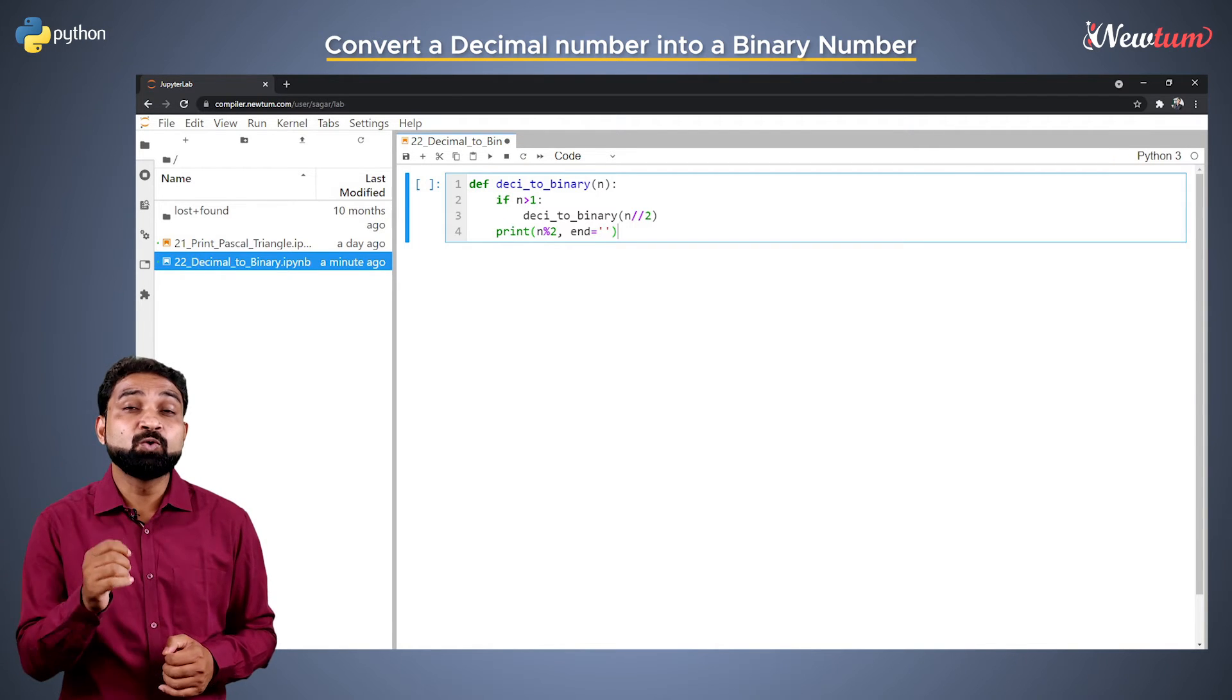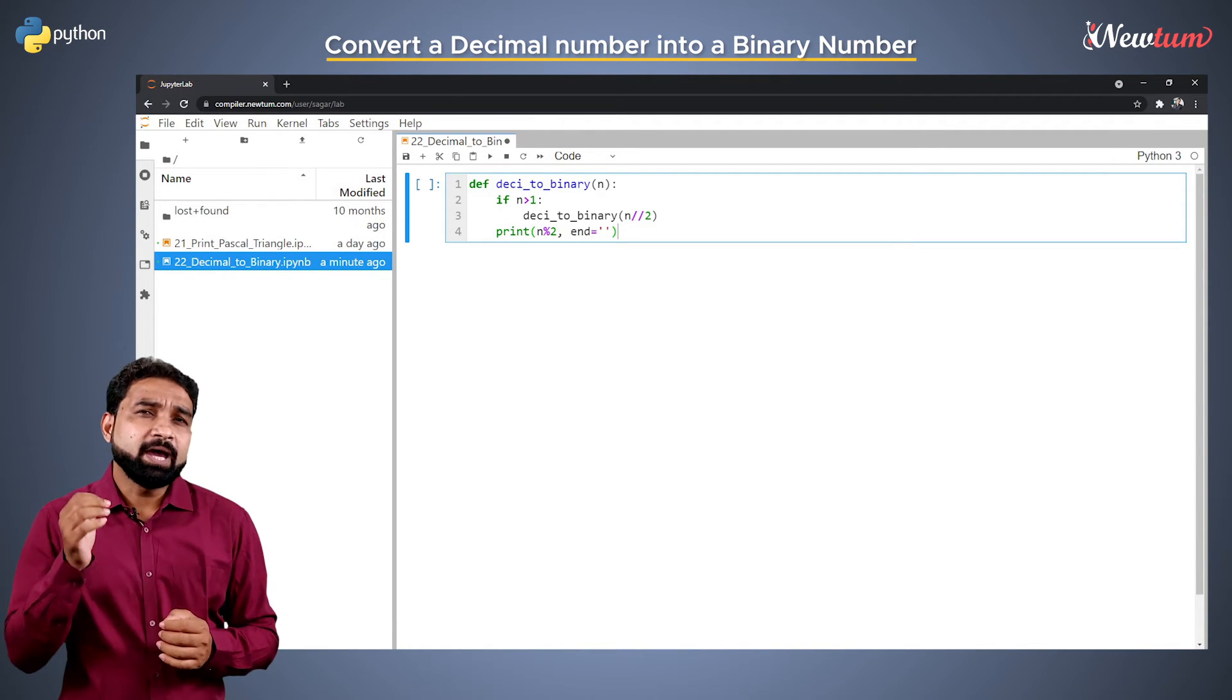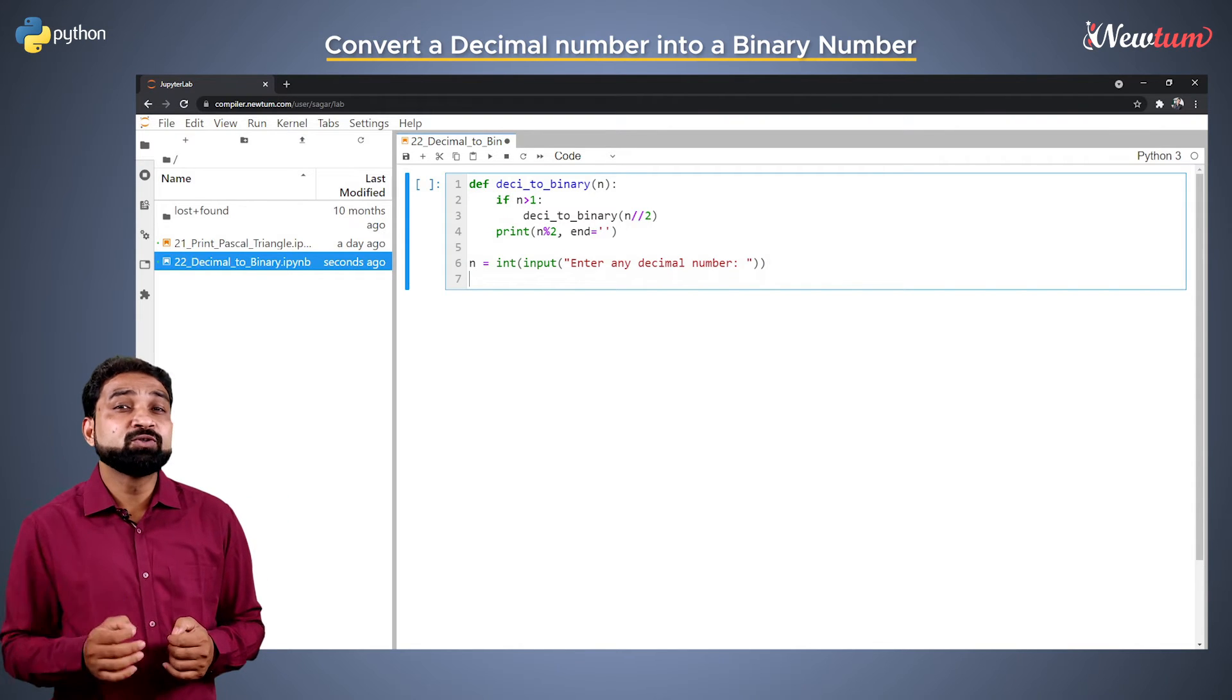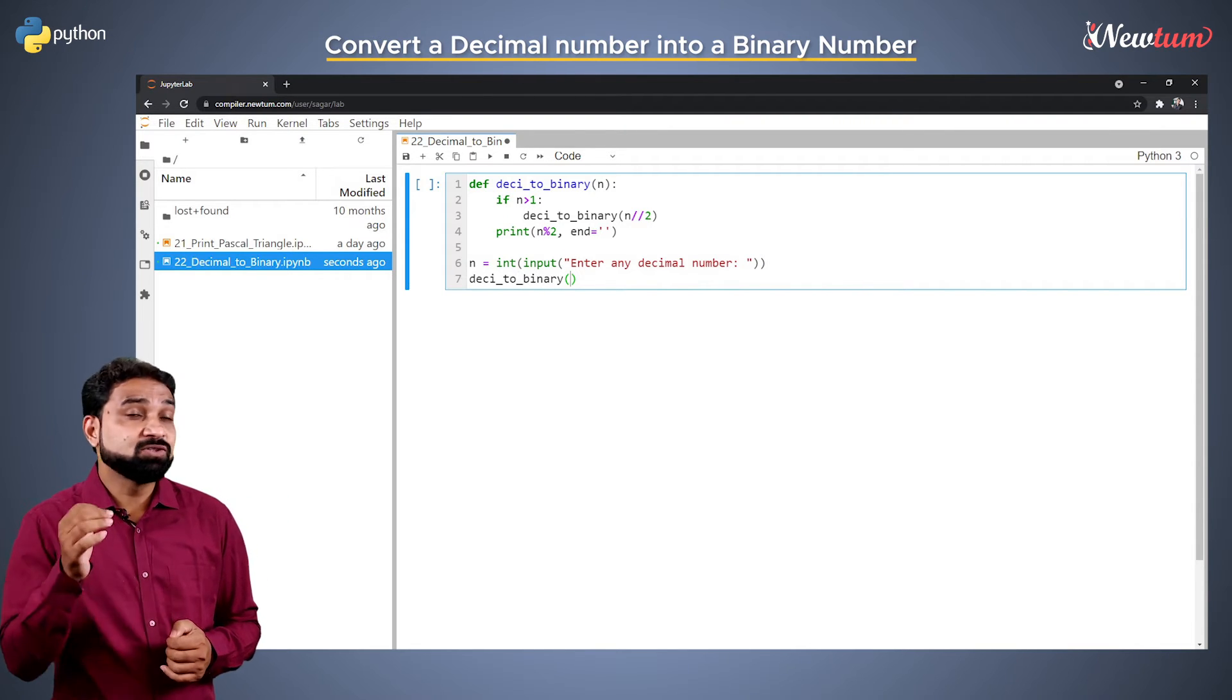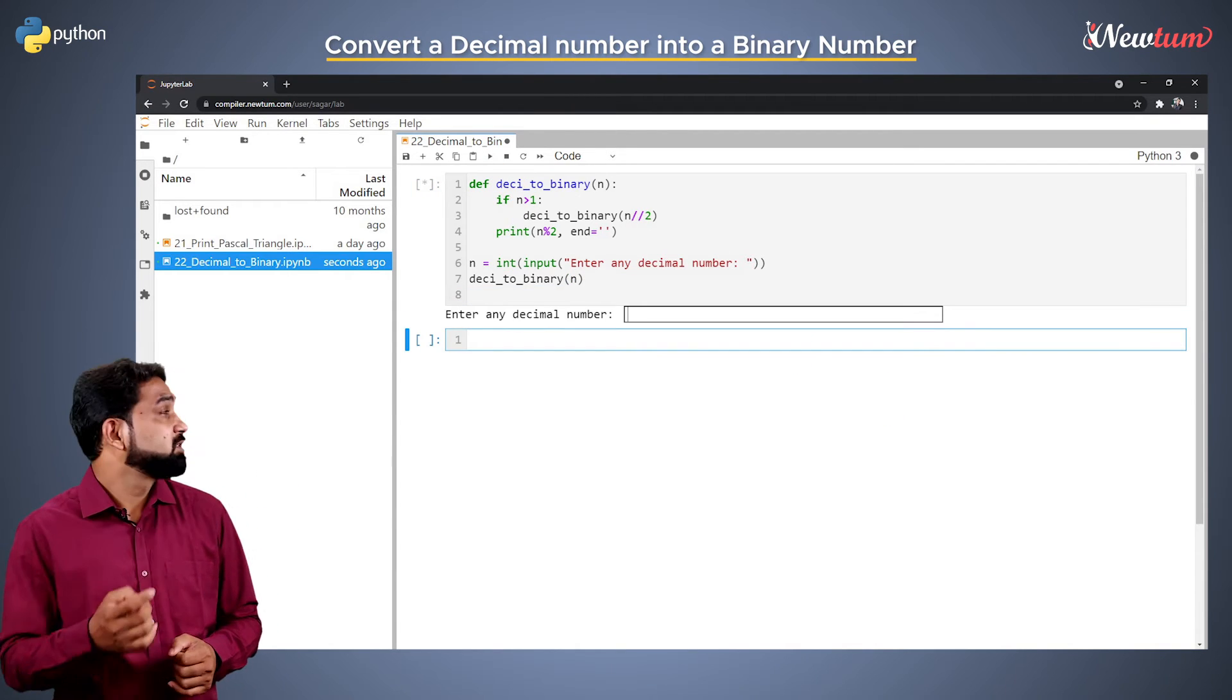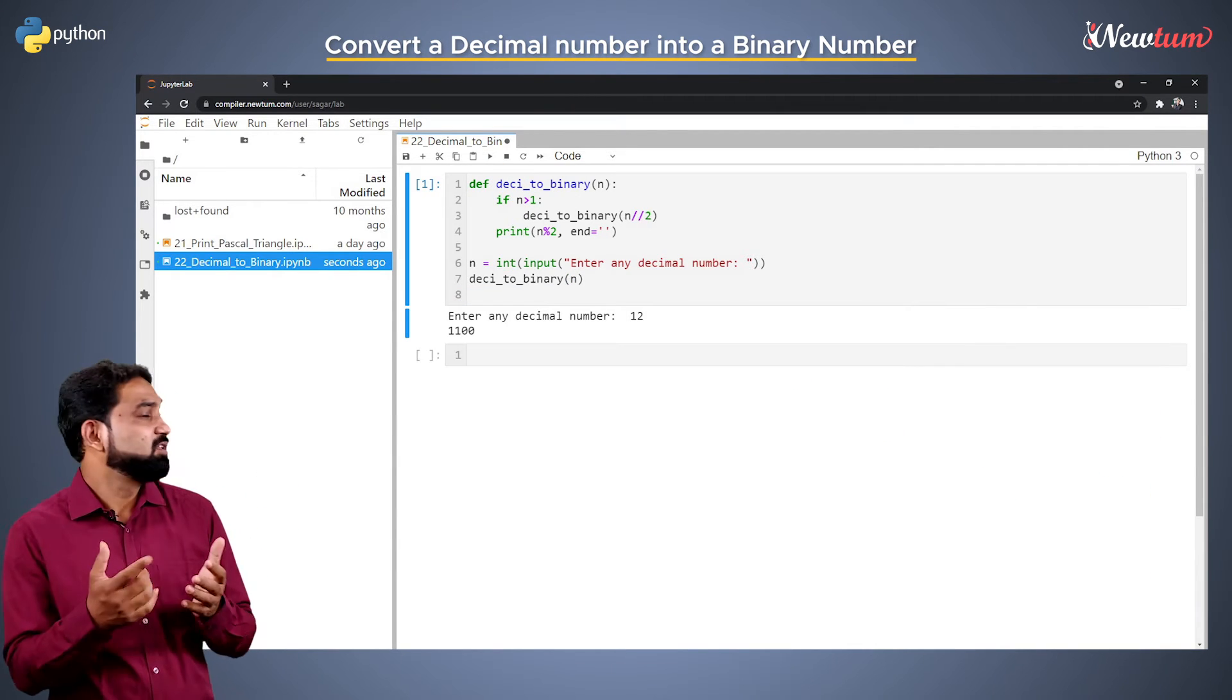We will now write the code to invoke this function. Accept the user input in the variable n. Then call our user-defined function and pass the value n. Run the code, enter the value as 12. Well, we got the perfect output.